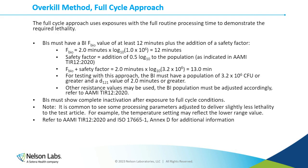The other option is the full cycle approach, although it's used much less commonly for these types of validations. For this to work, we must have BIs with very high resistance values — specifically, a BI demonstrating an Fbio value of at least 12 minutes plus a safety factor. That safety factor boils down to adding half of a log to the population required to achieve an Fbio of 12 minutes, so you're looking at a BI presenting resistance closer to 13 minutes. For both methods — half cycle or full cycle — we need to demonstrate complete BI inactivation.